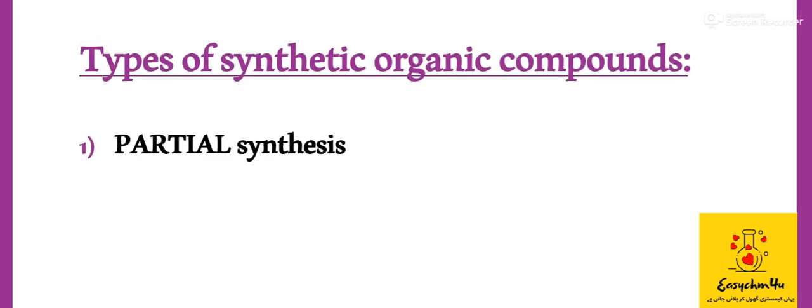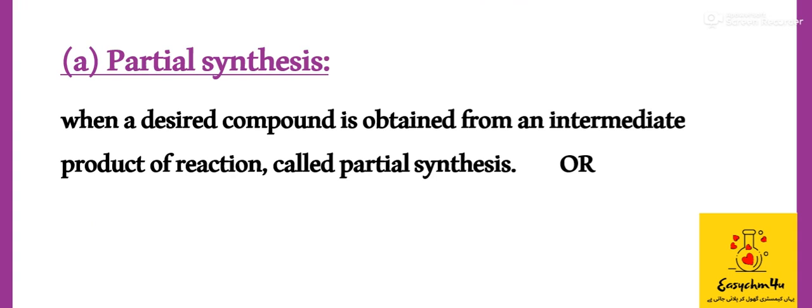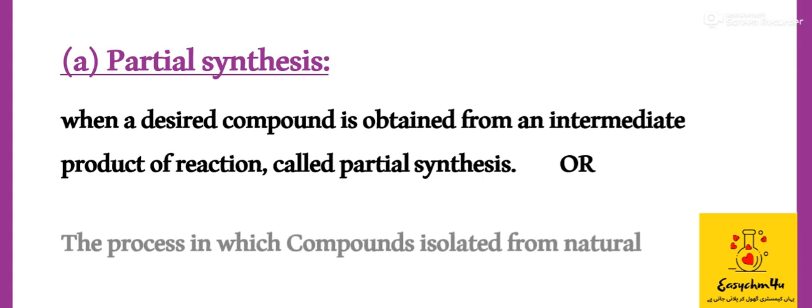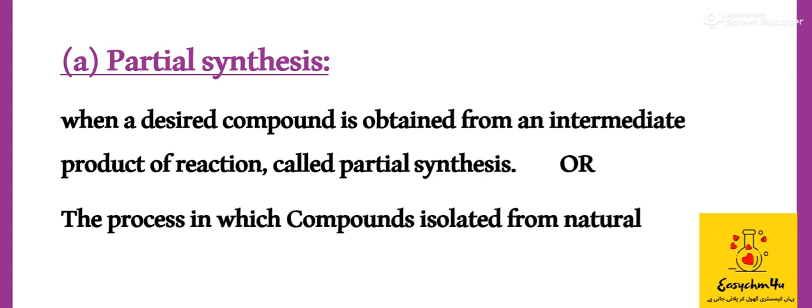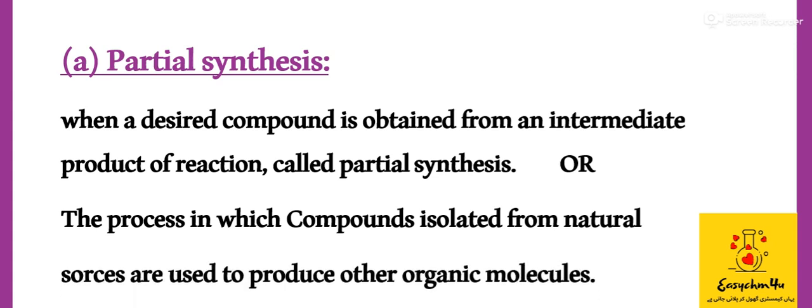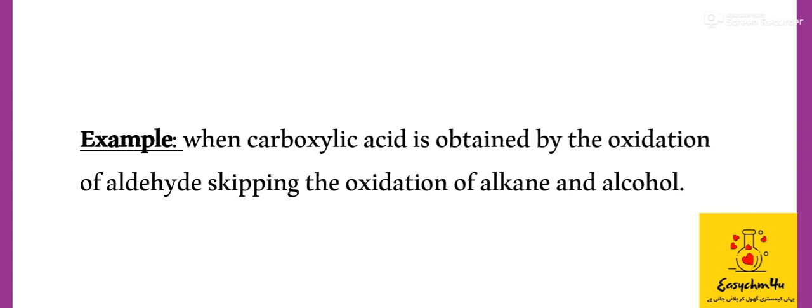One is partial synthesis and the second is total synthesis. Partial synthesis is when a desired compound is obtained from the intermediate product of a reaction. The process in which a compound isolated from natural sources is used to prepare other organic molecules. For example, when carboxylic acid is obtained by the oxidation of aldehyde, skipping the oxidation of alkane and alcohol. The aldehyde is obtained from a natural source and then utilized for making carboxylic acid. That's why it is partial synthesis.